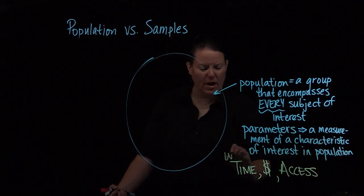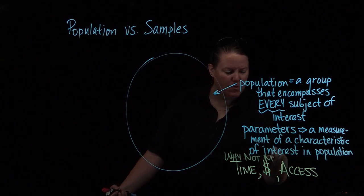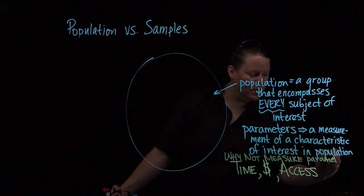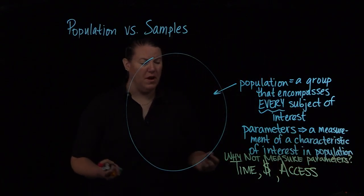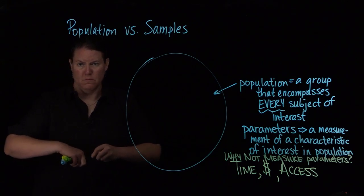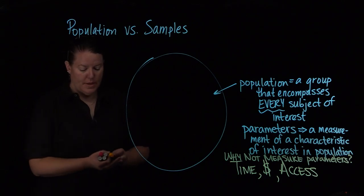So why not measure parameters is really what this should be called. Why can't we measure that? Well, the reason why is because we don't have enough time, we don't have enough money, and we don't have enough access to all of those subjects in the population. That's why we don't do it that way.